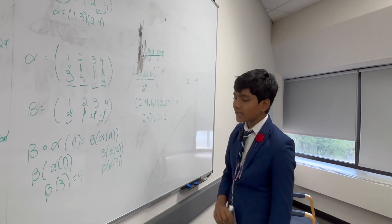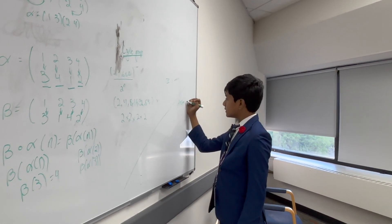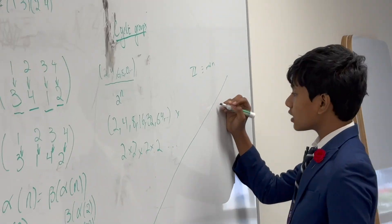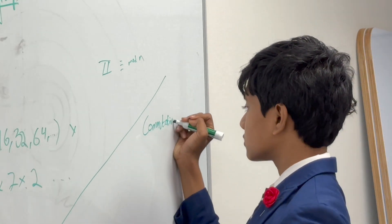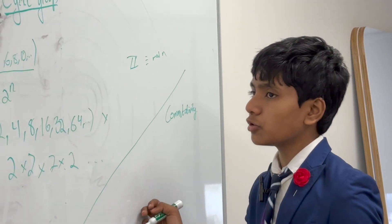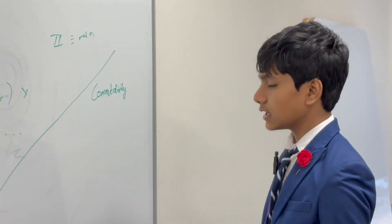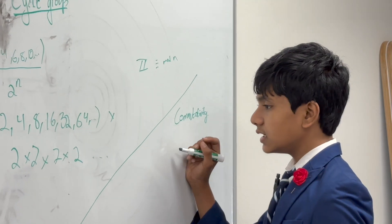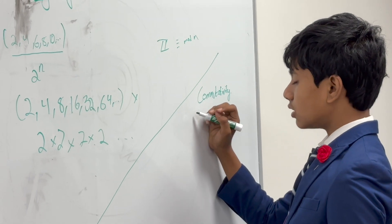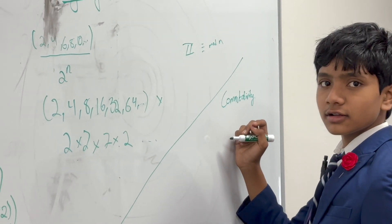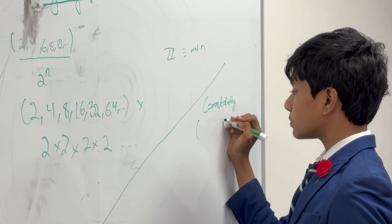And one last thing we'll talk about are abelian groups. So now, let's talk about commutativity in groups. Now, you might have noticed that the way we write these is kind of similar to the way we write regular matrices. So, let's pivot to how we can actually talk about groups of matrices. So, let's, for example, talk about the group of all invertible matrices.